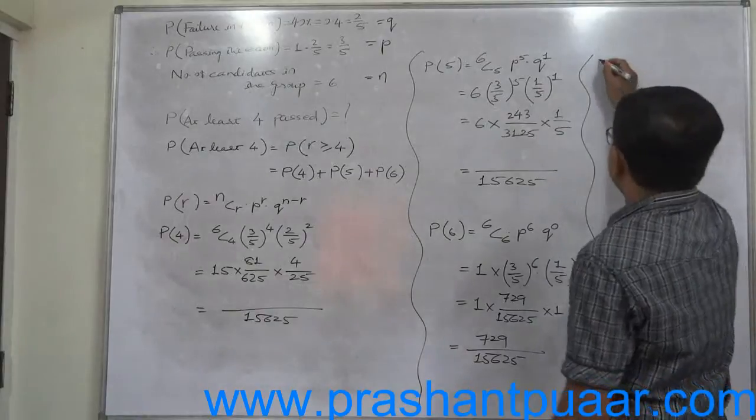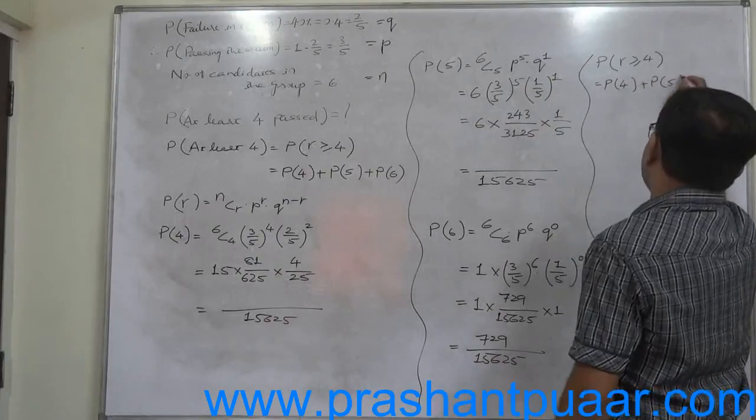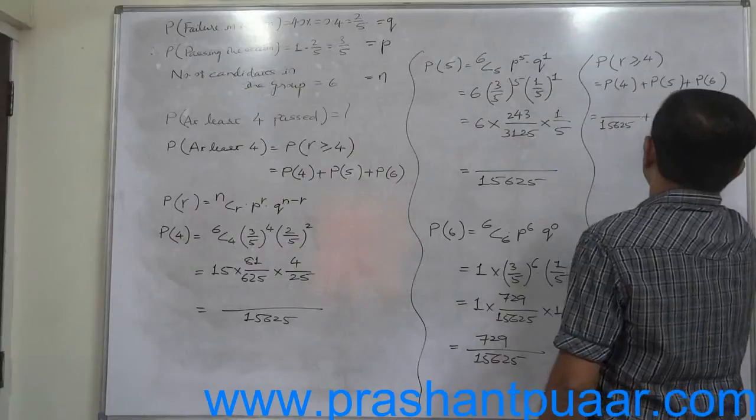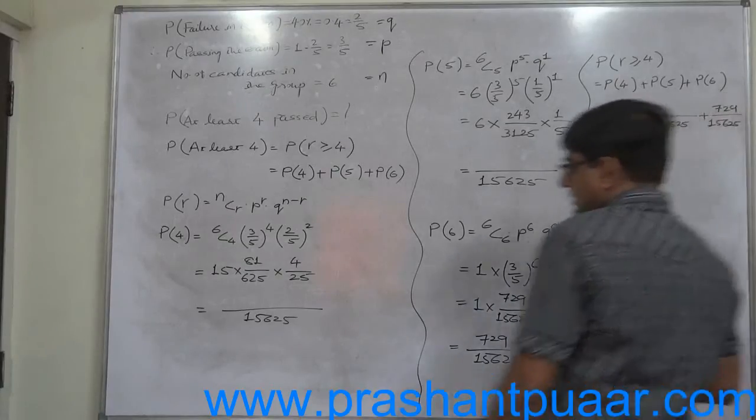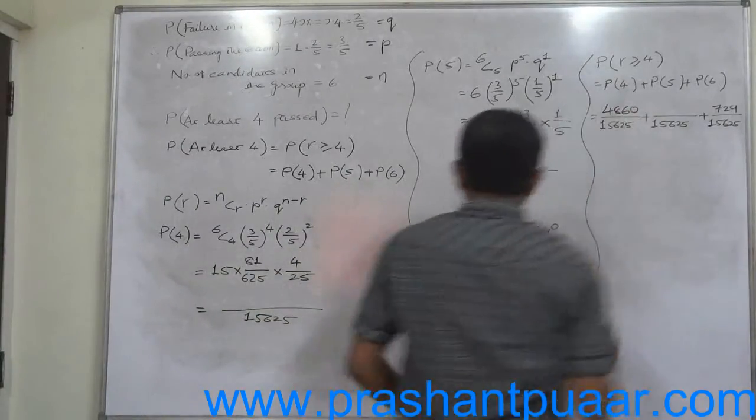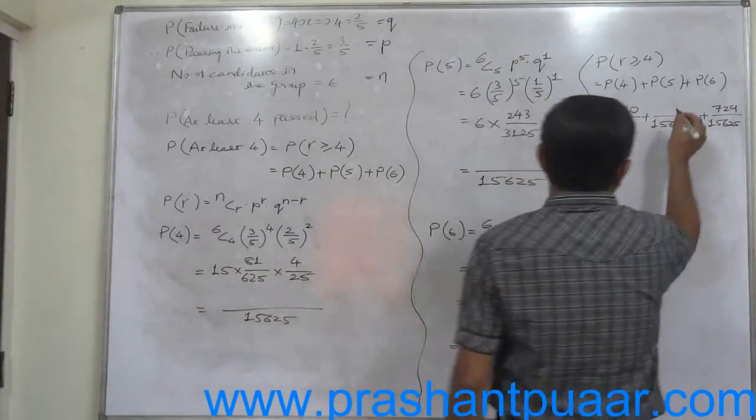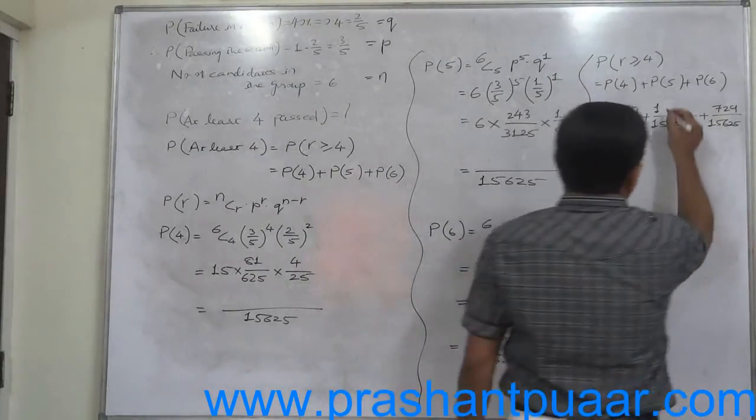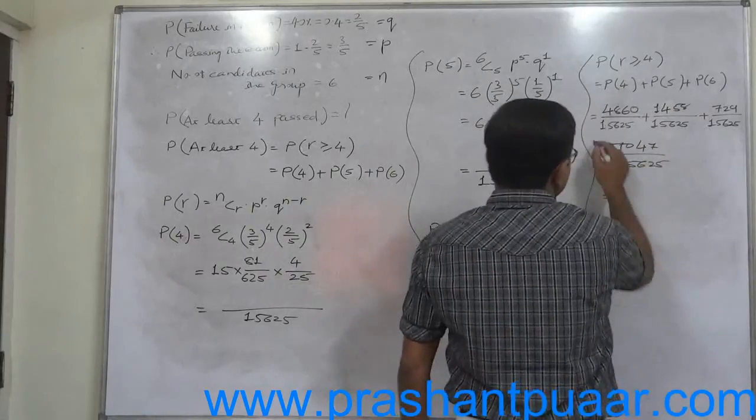Now the grand final answer: probability of at least 4 equals to P of 4 plus P of 5 plus P of 6. The final answer will be summation of all these 3 probabilities. What is 15 into 4? It is 60. 60 into 81 is 4860. In this case, 6 into 243, 1458. Now add these 3: 7047 divided by 15,625.